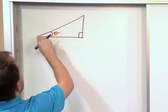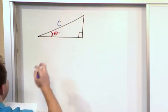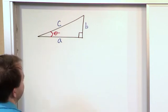And then we're going to label the longest side of our triangle, which is called the hypotenuse. We're going to label that c, and then we're going to label this side a, and we're going to label this side b.